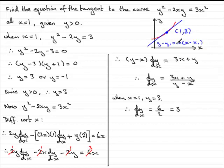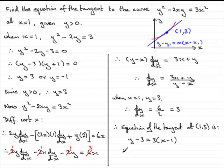So we've now got our m value, and we're ready to find the equation of the tangent using this version of the straight line. So let's just put down that therefore the equation of the tangent at (1, 3) is: we can write it as y - y₁, y₁ being 3, equals m the gradient which is 3, bracket x - x₁ which is 1.